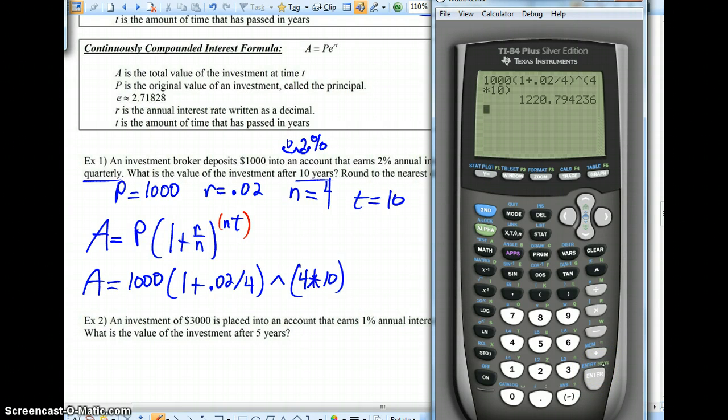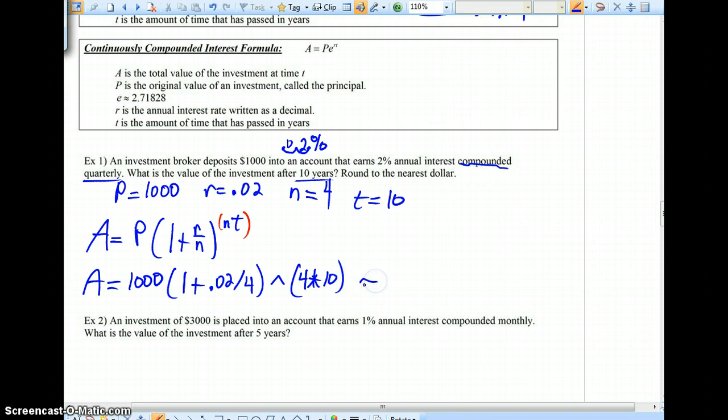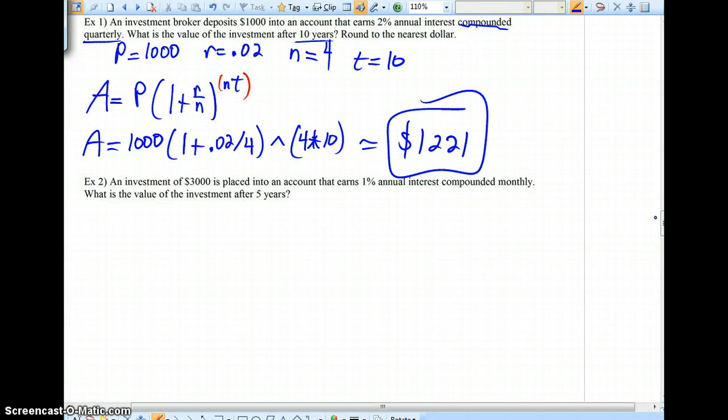This problem wants us to round to the nearest dollar. If you read the directions, 1,221 would be what we get rounding to the nearest dollar. So that's the bank giving you $221 in addition to what you open the account with as a way of saying thank you. Let's do number two.